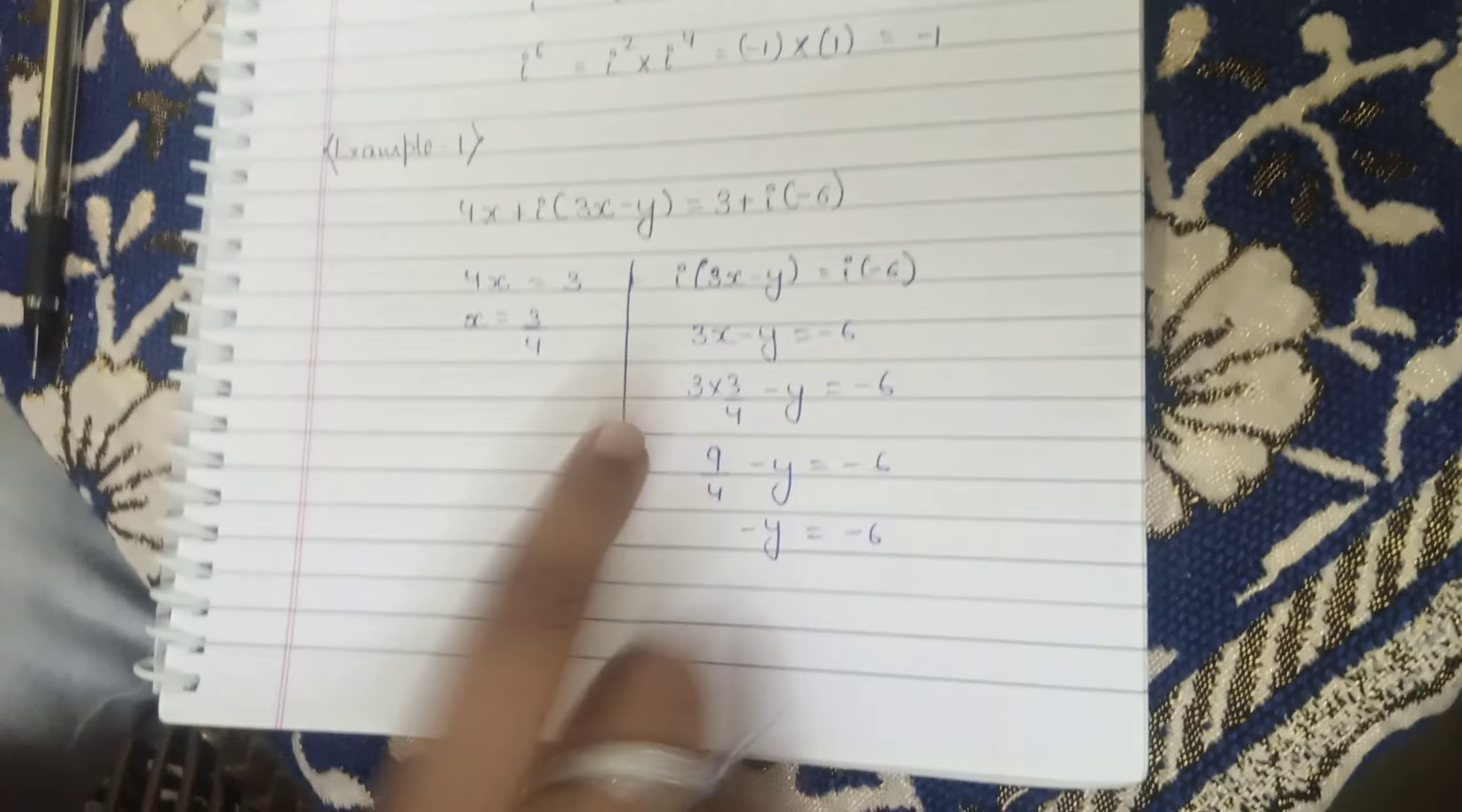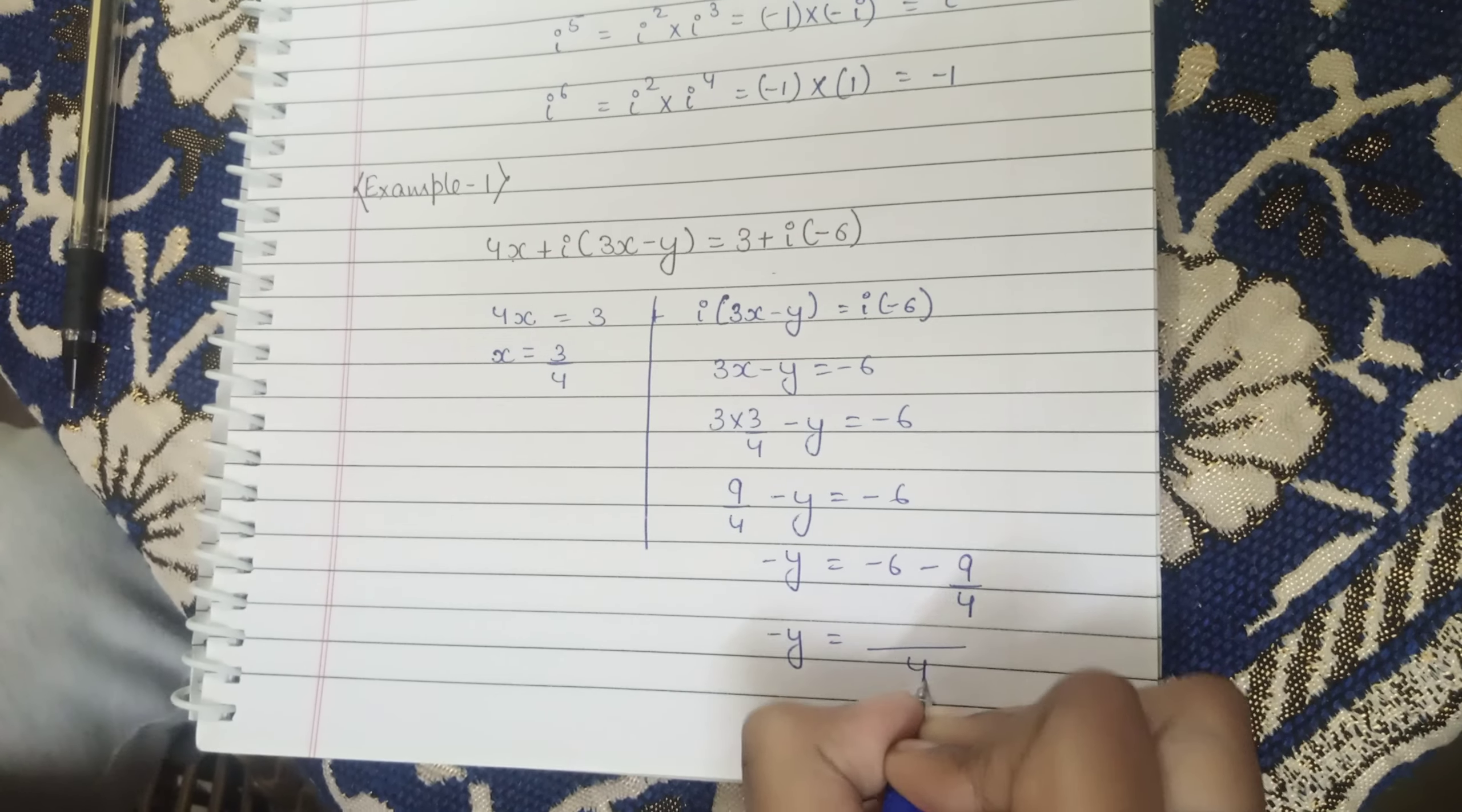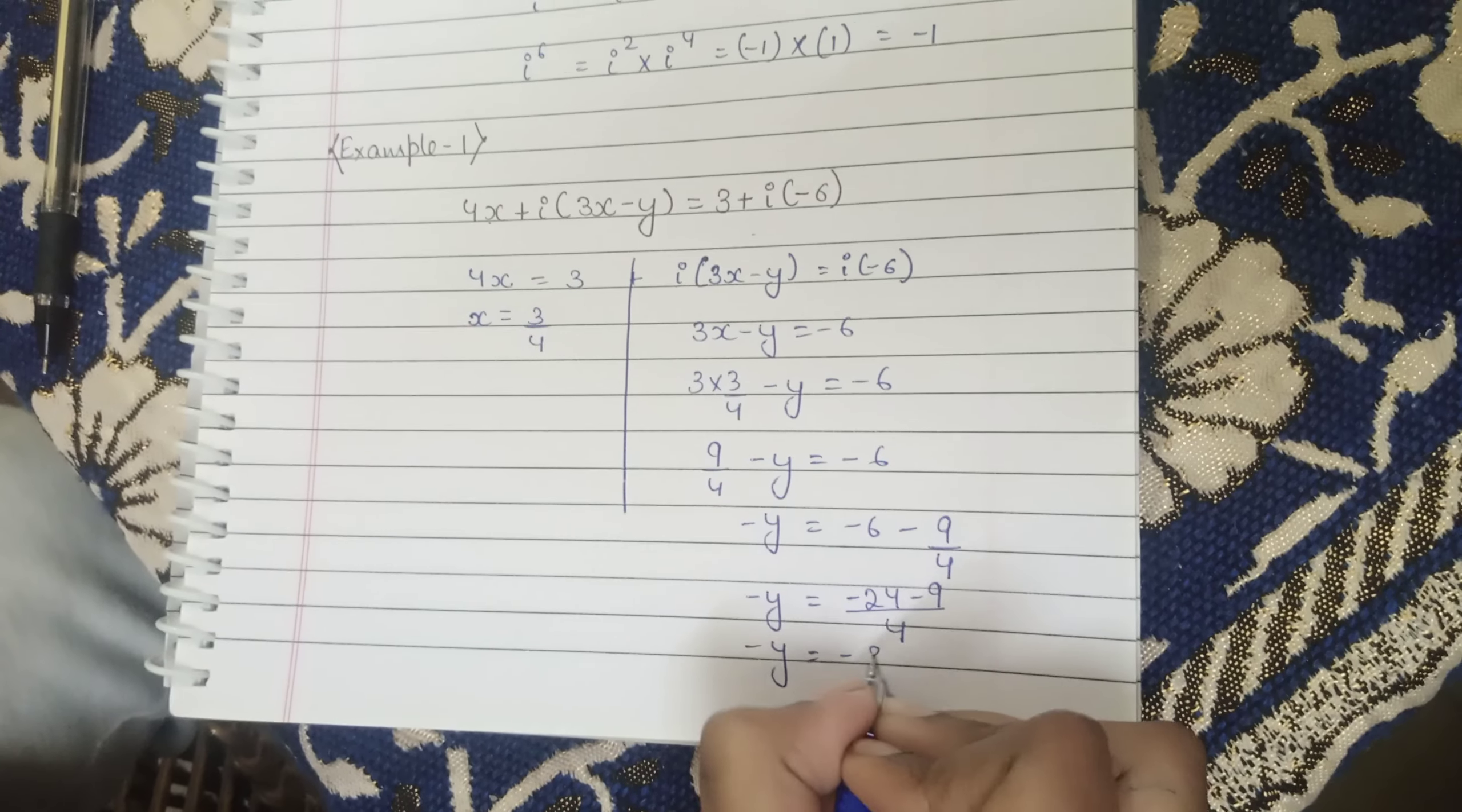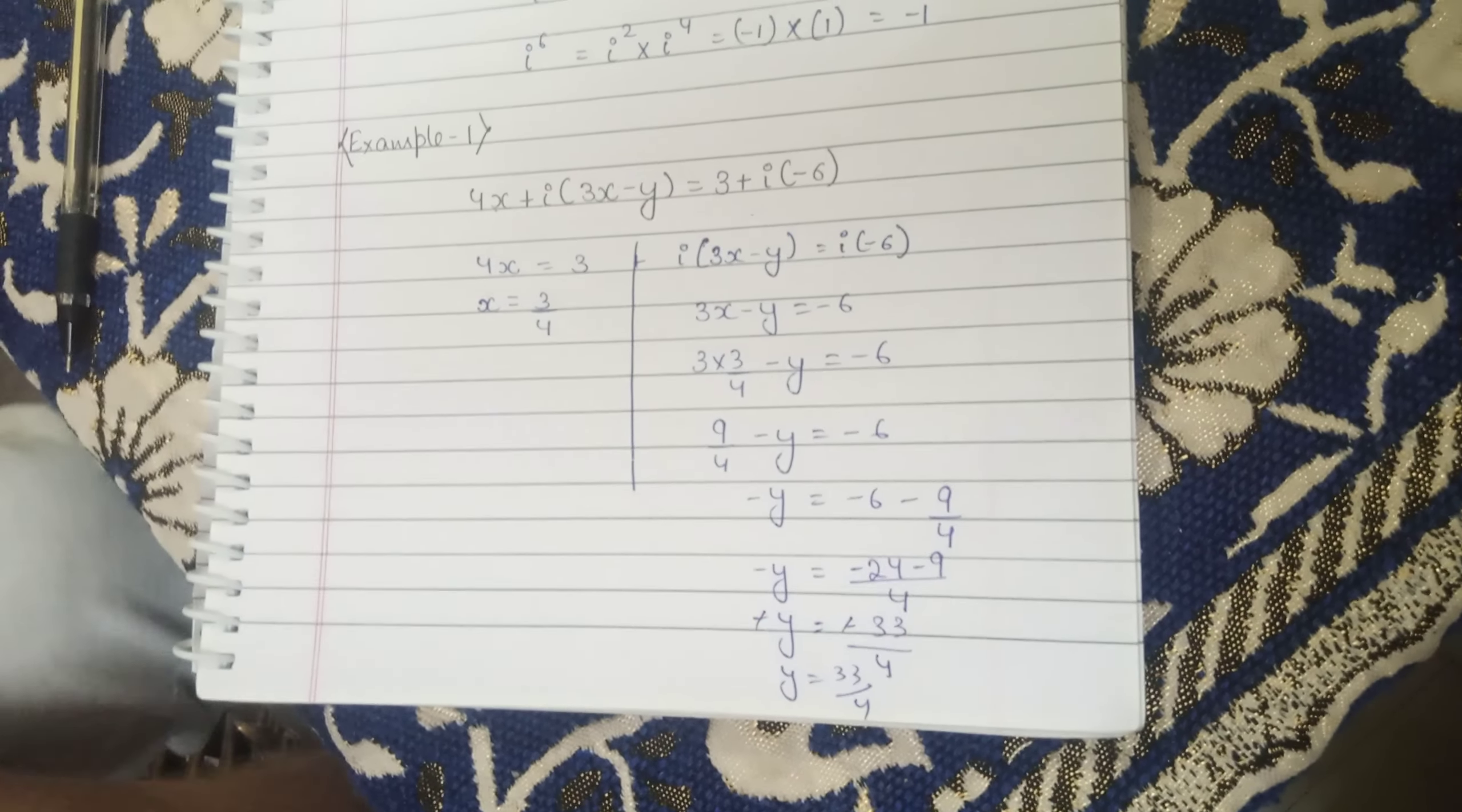Equals to minus 33 upon 4. Minus minus cancel, y equals to 33 by 4. That's all, okay.